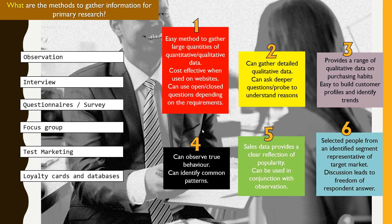On the screen on my right-hand side you can see many definitions, also labeled as one, two, three, four, five, six — but they're not in the correct order. I assume that you would have covered this in class already, so I'm going to give you some time, about 15 seconds or so, to go through this and try to match the correct definition to the correct type of method to gather information.